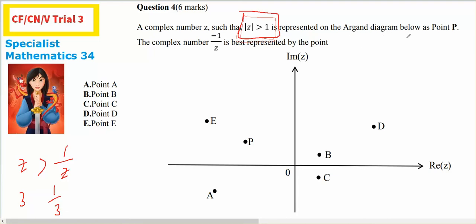So, represents by point P. So Z is point P. Complex number of negative 1 on Z. Negative 1 on Z. Obviously it's going to be a magnitude much, much smaller. So it can't be any of these. It can only be B or C.